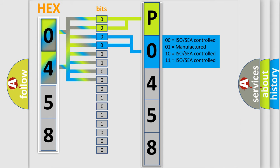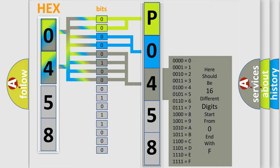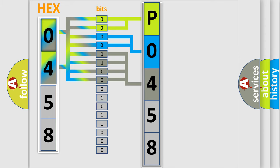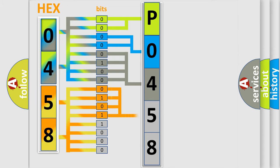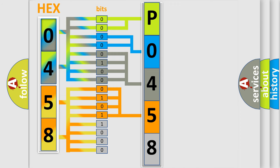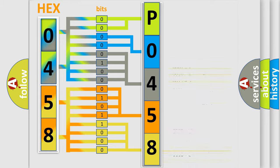The last bits of the first byte define the third character of the code. The second byte is composed of a combination of eight bits. The first four bits determine the fourth character of the code, and the combination of the last four bits defines the fifth character. A single byte conceals 256 possible combinations.